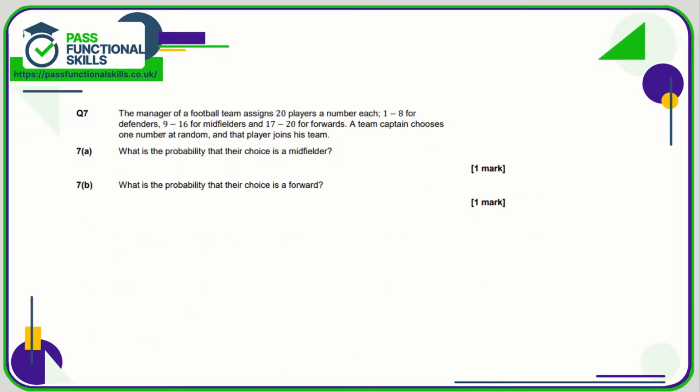Question number seven: so the midfield is numbered 9 to 16, so 9, 10, 11, 12, 13, 14, 15, 16—so that's 8. So 8 out of the 20, which is the same as 4 out of 10, which is the same as 2 out of 5.